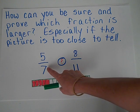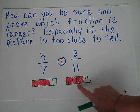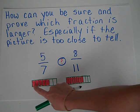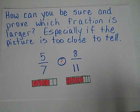In this one I'm working with 5 sevenths and 8 elevenths. When you're trying to break it into 7ths and elevenths, it might be difficult to make each piece perfectly exact. And if you're not exact, your picture might be off and you won't be able to tell which fraction is larger.